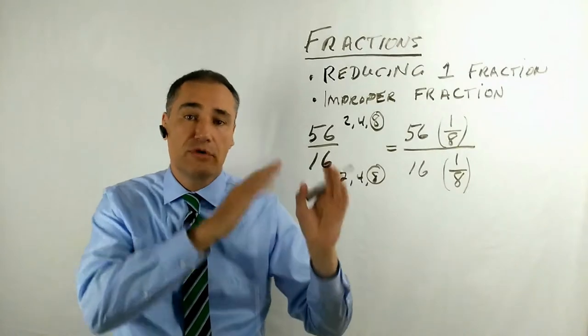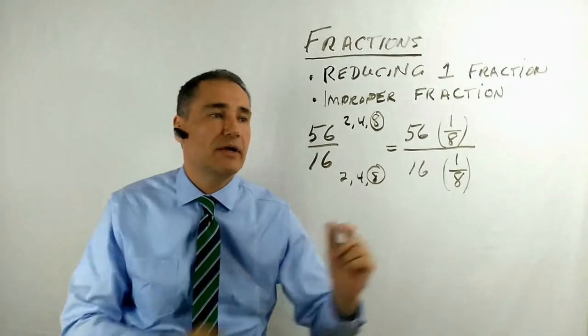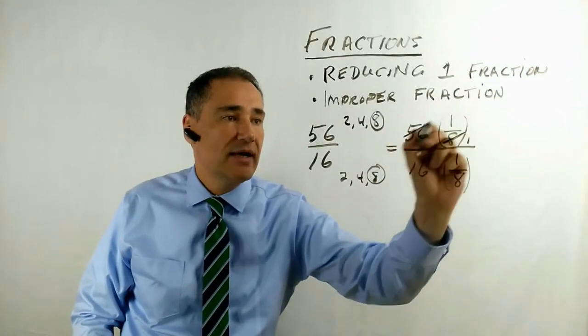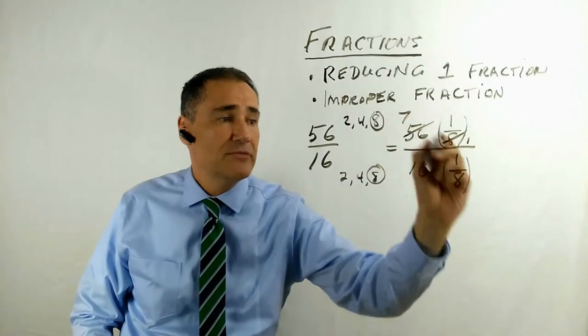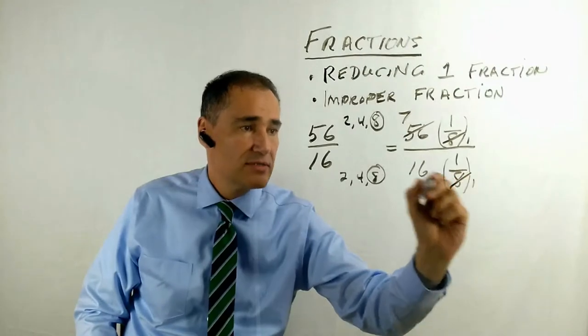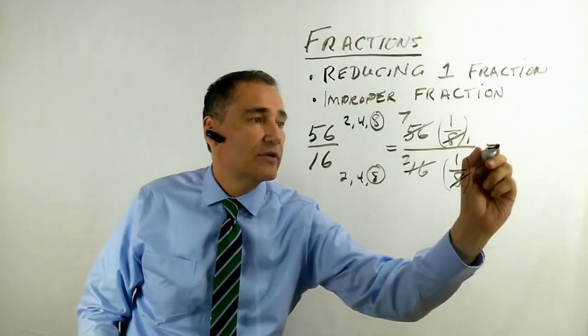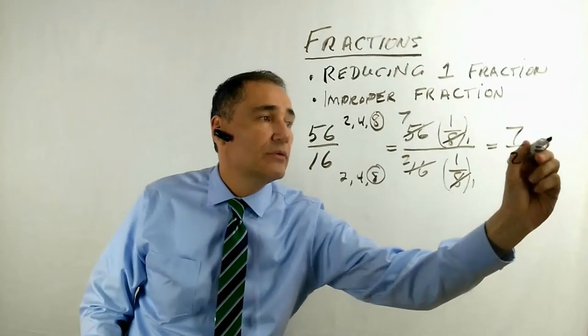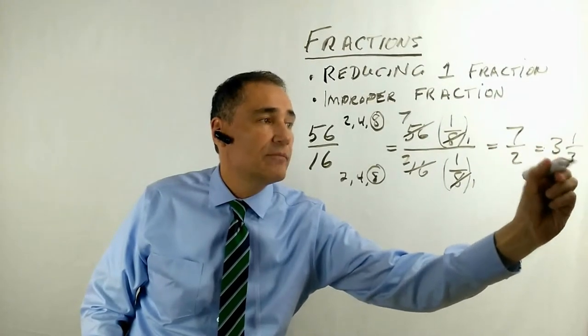You're just helping reduce the numerator and reducing the denominator. So 8 divides into itself once, 8 divides into 56 seven times, 8 divides into itself once, 8 divides into 16 two times. So your answer is 7 over 2, which is also 3 and a half.